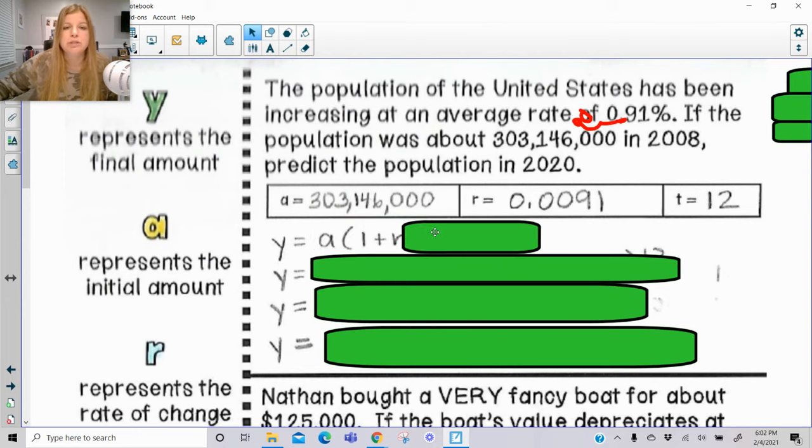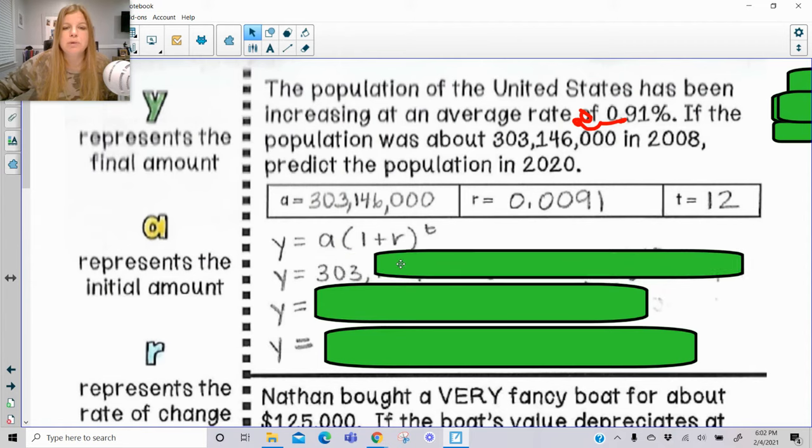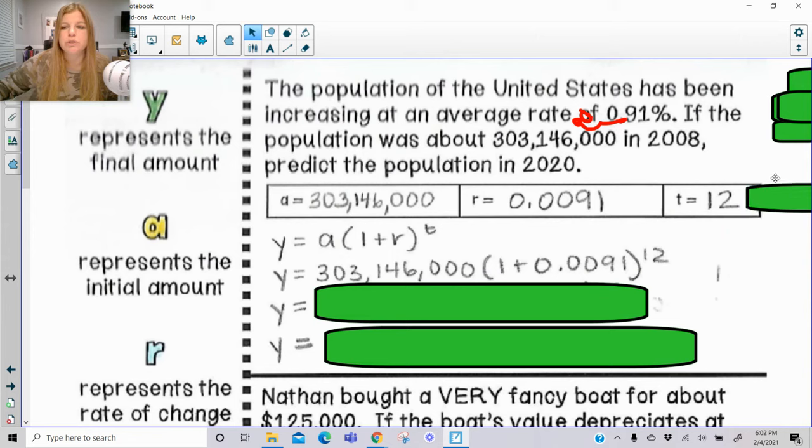y, which is going to be the final amount, is equal to the initial amount times 1 plus the rate in decimal form to the t power. And this is what it would look like if I substitute those values in to my formula. Now you can see I substituted in the values for a, r, and t. Now the only thing we can really do to clean this up right now is to add 1 plus 0.0091.